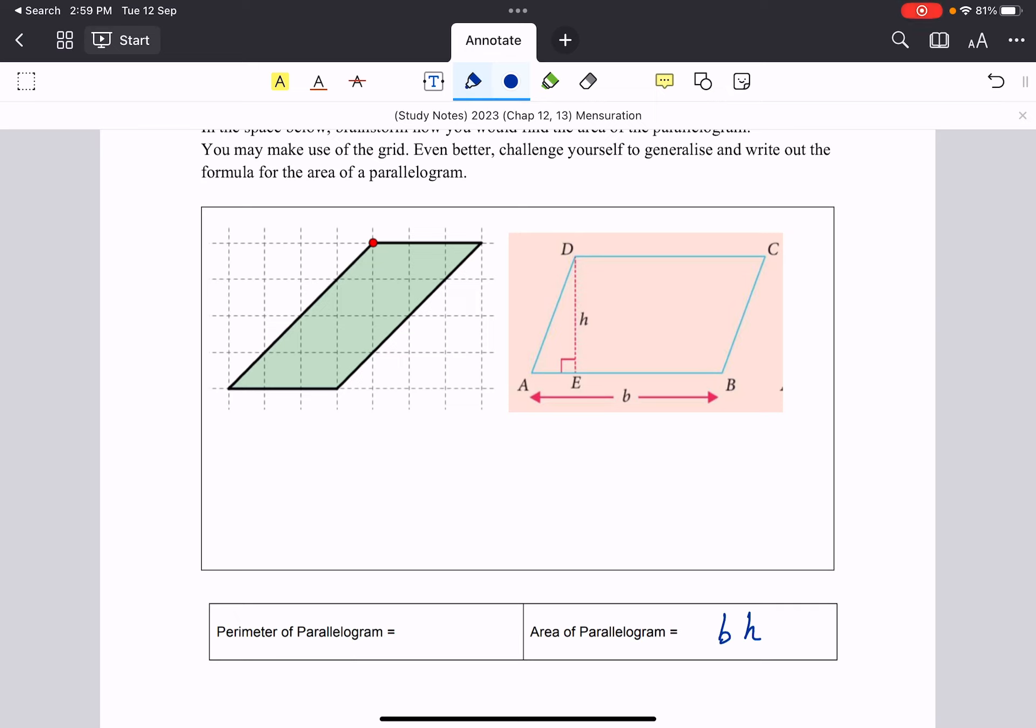Whereas for a rectangle, the height and the side happen to be the same length. But for parallelogram, it is not so. So remember to use the height. Now, as for the perimeter, there is actually no shortcut to it. We just need to add up all the sides. There are no shortcuts, no formulas for that.